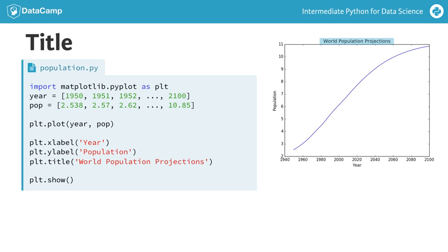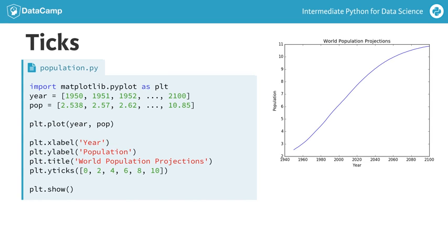To put the population growth in perspective, I want to have the y-axis start from 0. We can do this with the yticks function. The first input is a list. In this example, with the numbers 0 up to 10, with intervals of 2. If we run this, the plot will change. The curve shifts up. Now it's clear that in 1950, there were already about 2.5 billion people on this planet.